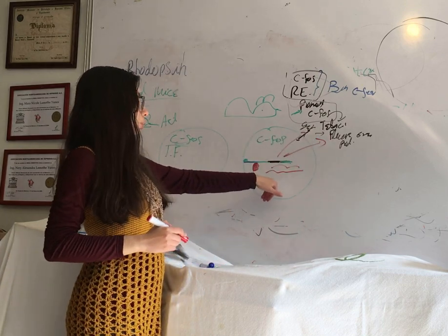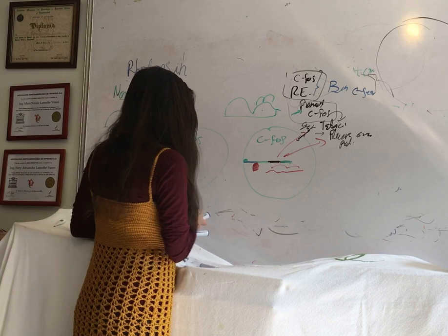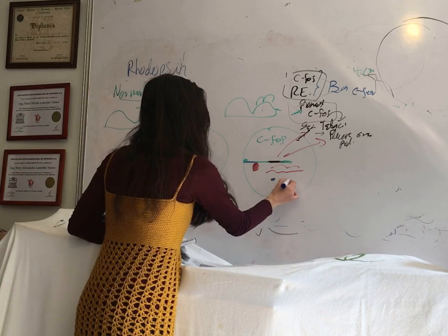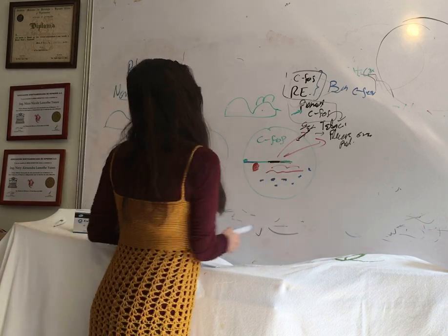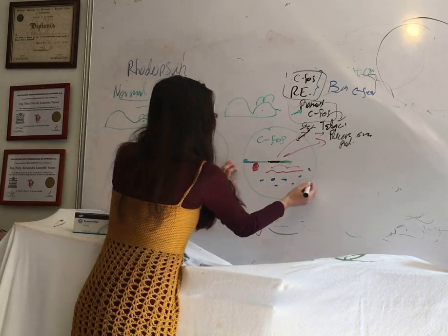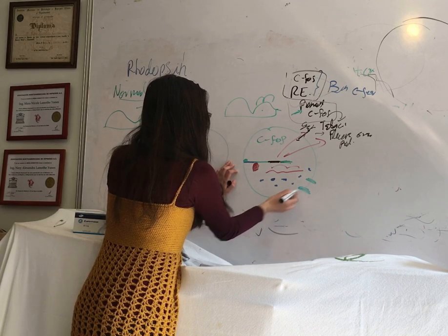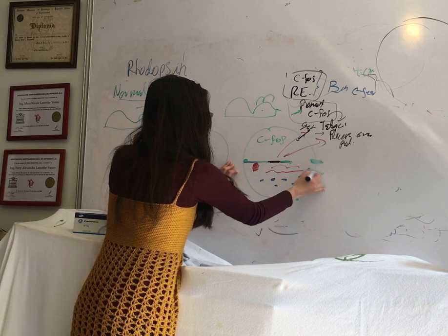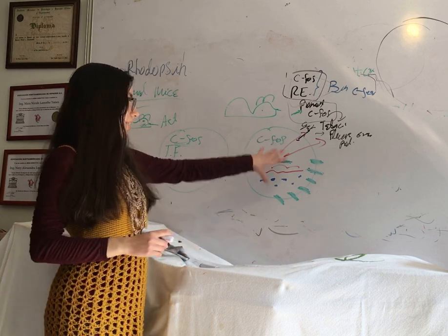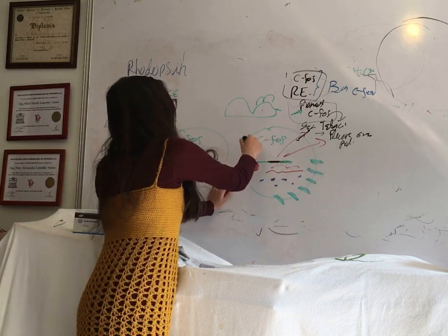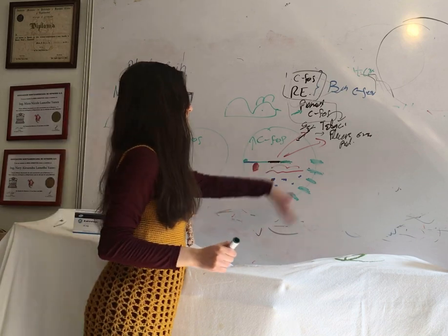These RNAs are going to go to the ribosome and we're going to produce tetracycline — many molecules of tetracycline — and we are also going to produce the green fluorescent protein. The green fluorescent protein is a transmembrane protein, so once the cell produces it, it's going to be expressed in the membrane. This means that when the cell is active, it expresses lots of c-fos, and then we have green fluorescent protein in the membrane and lots of tetracycline.